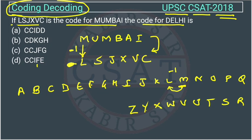Now we check: U is being converted into S. S is backward before U by two steps — first and second — so this is minus 2. Similarly, M is being converted into J. M is here, J is three steps backward — first, second, third — so minus 3.